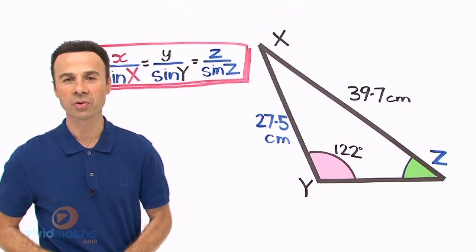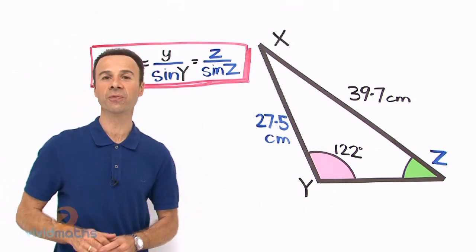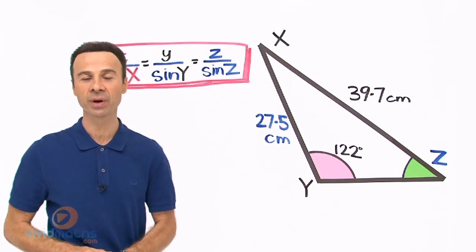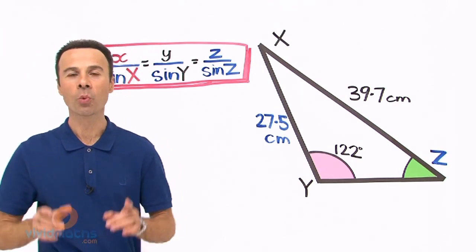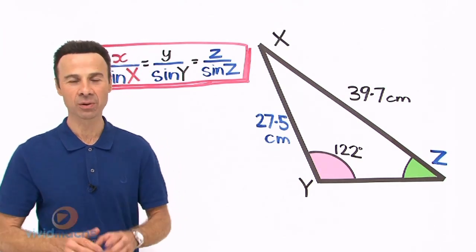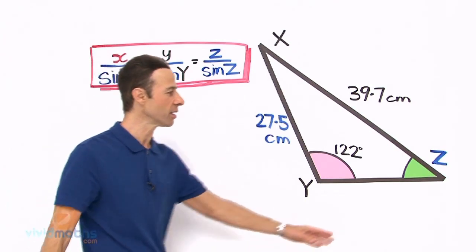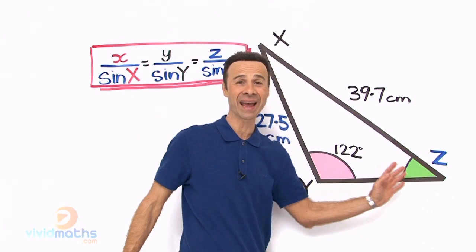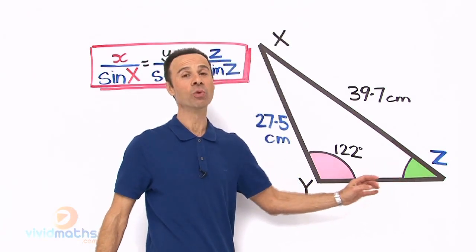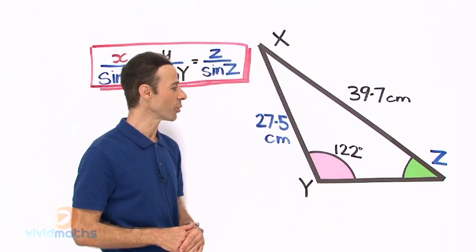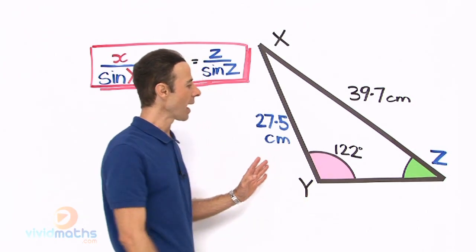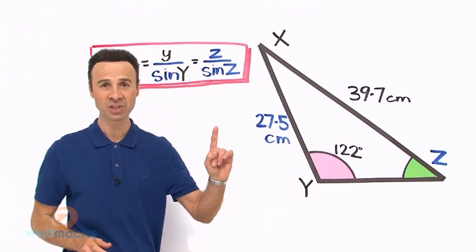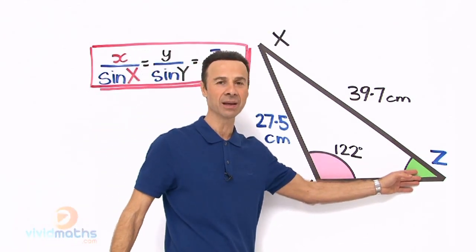The sine rule is not just about finding lengths and distances — it is also about uncovering angles. In this example we are looking for an angle, the pronumeral capital Z. Remember, capitals refer to angles and little letters refer to lengths. We have a triangle and we are given three pieces of information, and we are looking for the one missing angle.